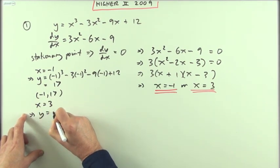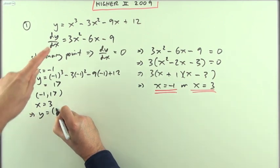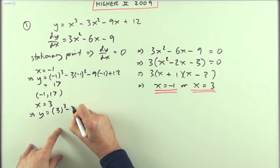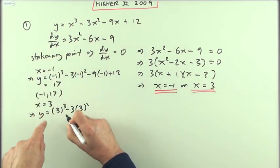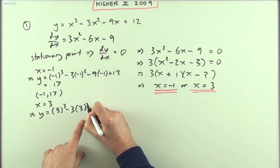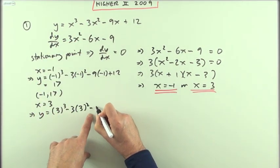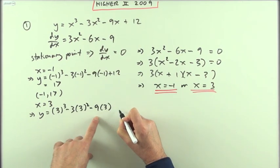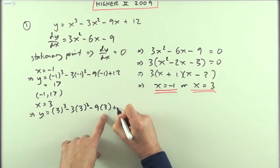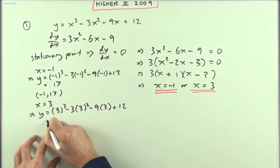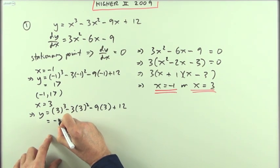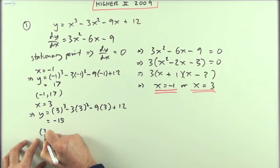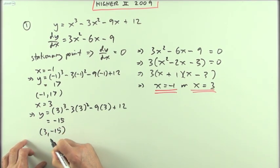When x = 3, y = 3³ − 3(3²) − 9(3) + 12. That's 27 − 27 − 27 + 12 = −15. So the other point is at (3, −15).